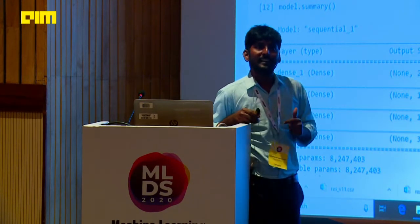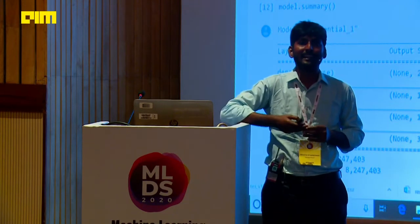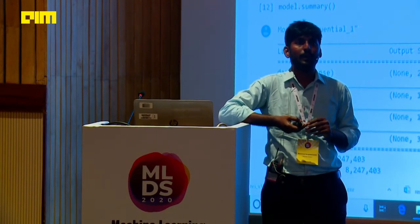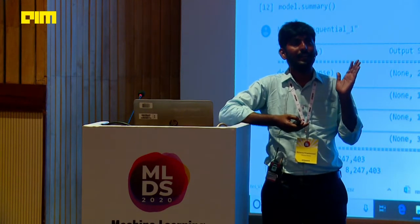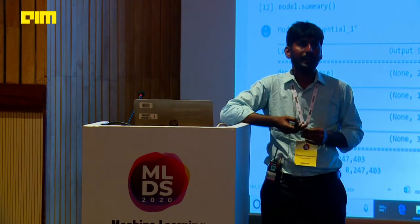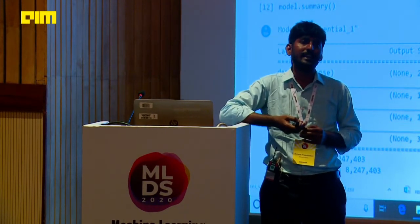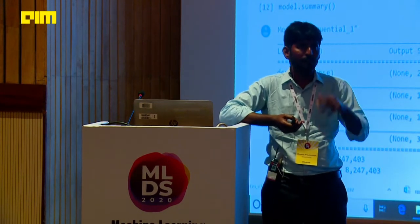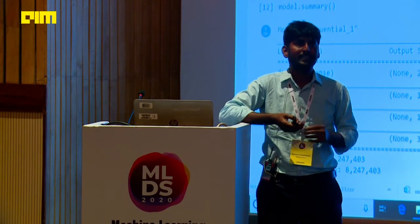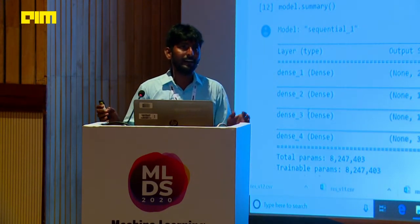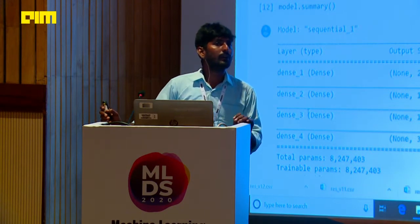This is a balanced dataset. With respect to images, there is a concept called data augmentation where you can generate more samples by applying image translation, adding random noise, flipping, and image rotations. When your data is unbalanced, you can go for data augmentation. In this case I used balanced data — each class has 1,000 samples, totaling 3,000 samples. If your data is not balanced, then you can go for data augmentation.